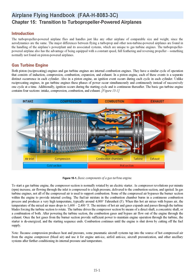Chapter 15: Transition to Turbopropeller-Powered Airplanes. Introduction. The turbopropeller-powered airplane flies and handles just like any other airplane of comparable size and weight, since the aerodynamics are the same. The major differences between flying a turboprop and other non-turbine-powered airplanes are found in the handling of the airplane's powerplant and its associated systems, which are unique to gas turbine engines. The turbopropeller-powered airplane also has the advantage of being equipped with a constant speed, full feathering and reversing propeller, something normally not found on piston-powered airplanes.